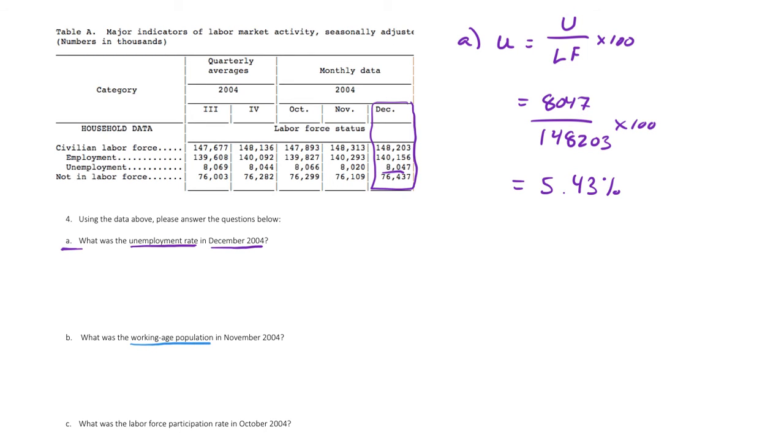We're looking for the working age population in November of 2004. So again, let's make sure we're using the right equation. So part B, we're looking for that working age population. And remember, the working age population from the data that we're given is going to be everyone in the labor force plus everyone not in the labor force.